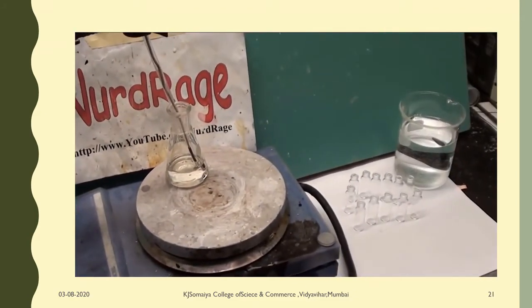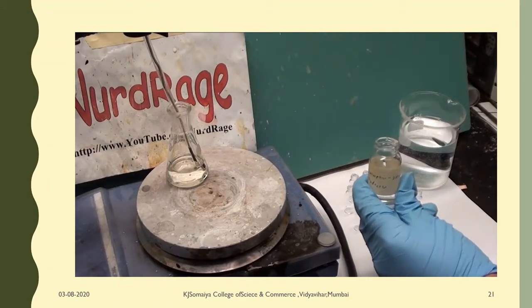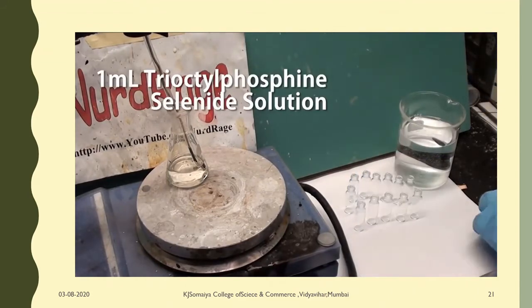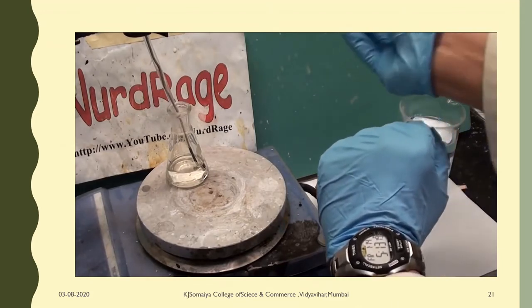While you wait, get everything set up. Have a dozen or so small vials or test tubes and prepare a syringe with 1mL of the tri-octylphosphine selenide solution from before. Be ready, because you need to work quickly.